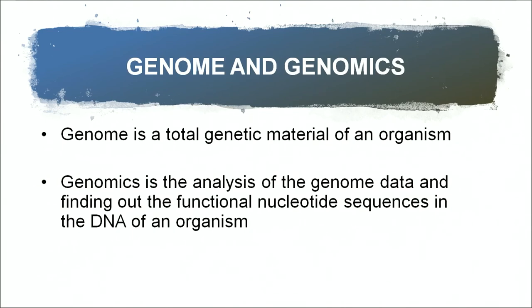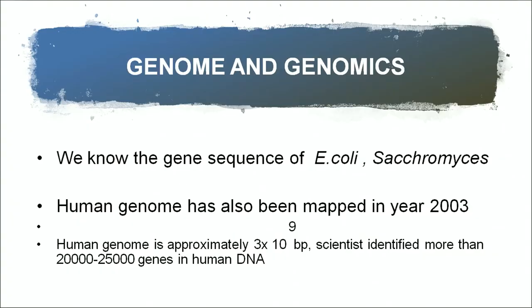What is genome and genomics? Genome is the total genetic material of an organism. Genomics is the analysis of genome data and finding out the function of the nucleotide sequences in the DNA of an organism. We know the genome sequence of E. coli, Saccharomyces, Arabidopsis, and the human genome has also been mapped. The human genome mapping was a very big project; the human genome is approximately 3 × 10⁹ base pairs, and scientists have identified more than 20,000 to 25,000 genes in human DNA.